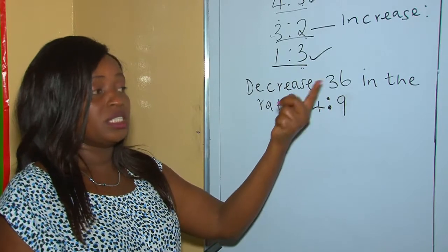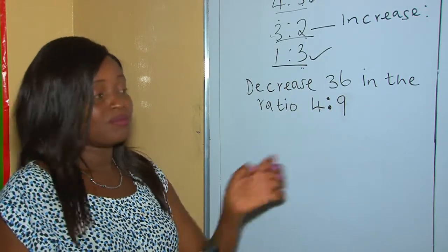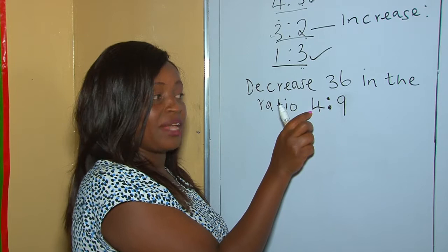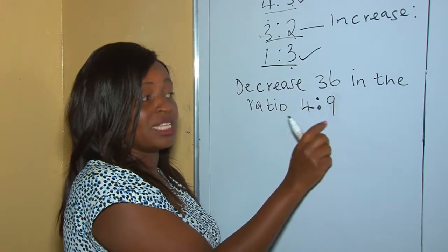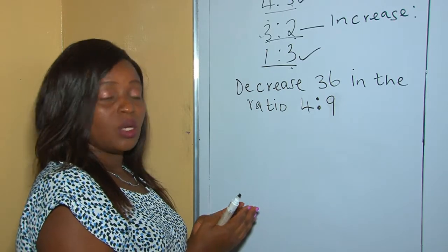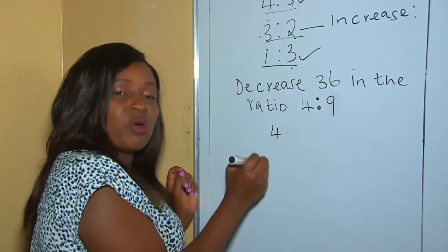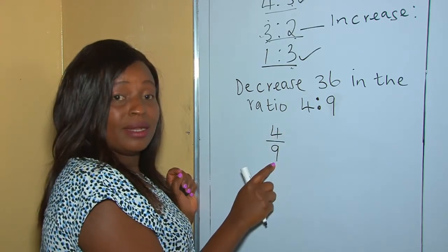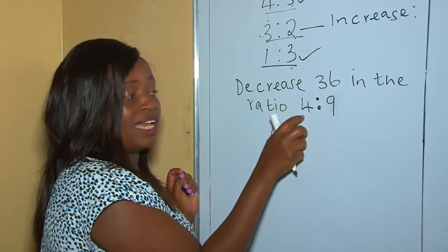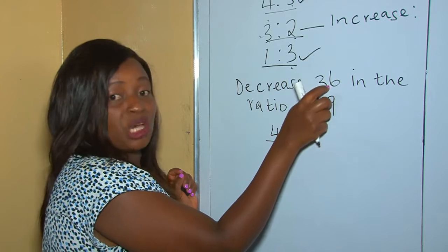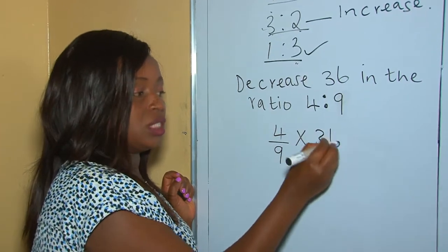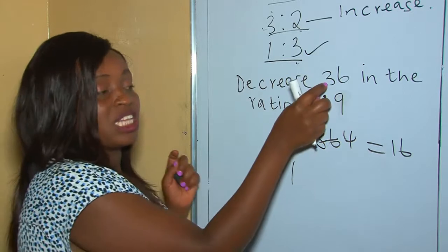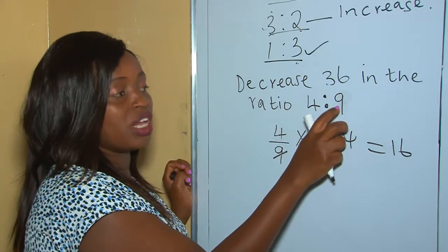Let's now decrease a quantity using the ratio 4 is to 9. As you can see, our current number here is smaller than the old number, so this is definitely a ratio decrease. When we are decreasing, we write our numerator to be smaller than our denominator — the upper number becomes smaller than the lower number. We are looking for the new value and the original is 36. So we multiply: 36 divided by 9, times 4 — that gives us 16. The original before decreasing was 36.